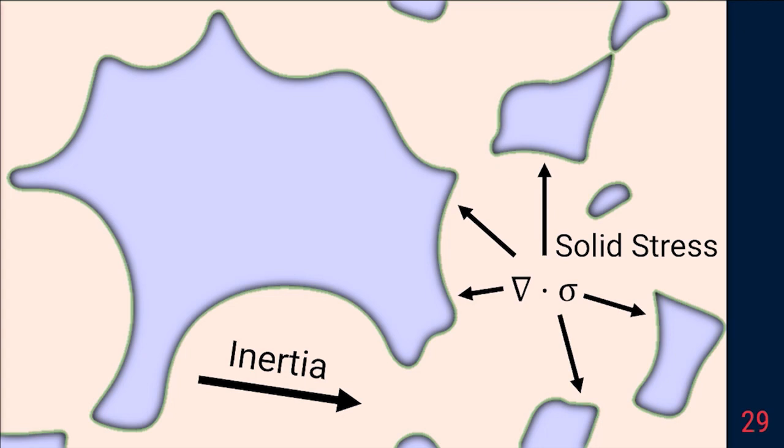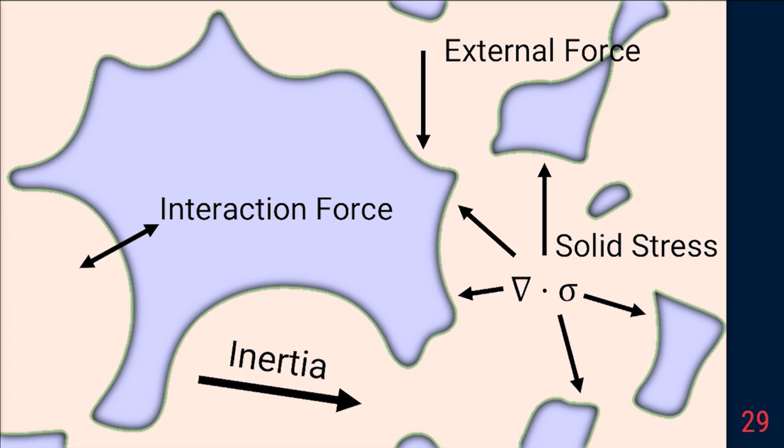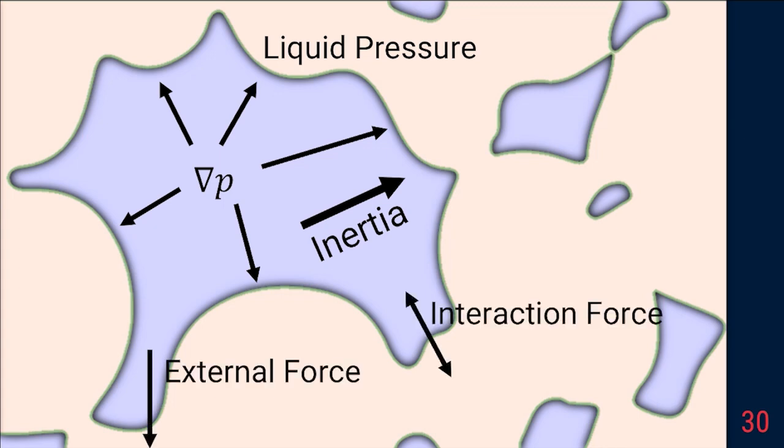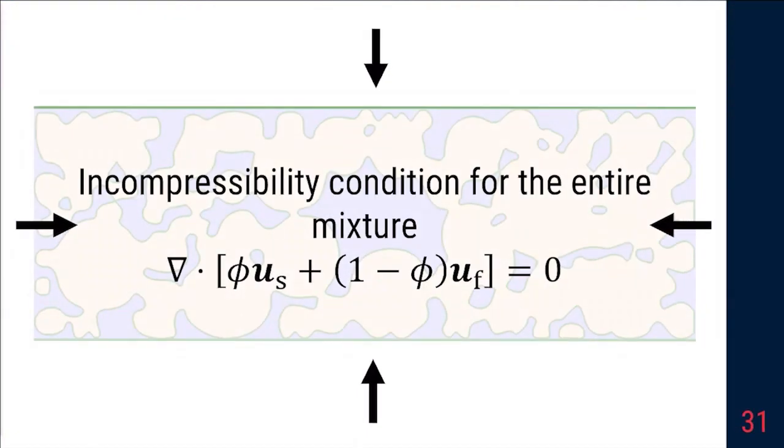we can have the inertia of the solid phase balanced by the internal stress of the solid matrix, the external force, and interaction force between solid and liquid phase. Similarly, for the liquid phase, its inertia is balanced by the internal pressure of the liquid phase, the external force, and the interaction force between solid and liquid phase. Finally, we have the incompressible condition for the entire mixture, which says there's a pressure to make the divergence of the combined velocity zero. It's apparent that correctly modeling the dynamics depends heavily on correctly handling the interaction forces and the incompressible condition.